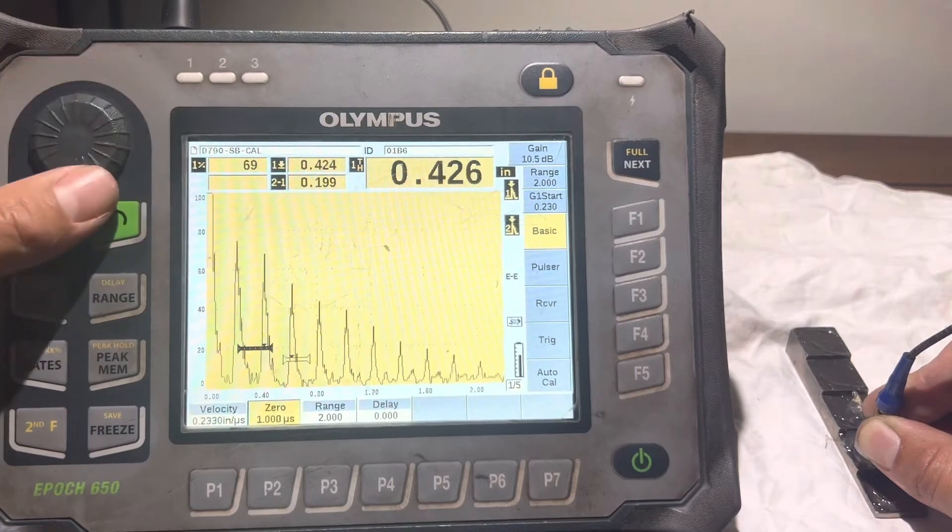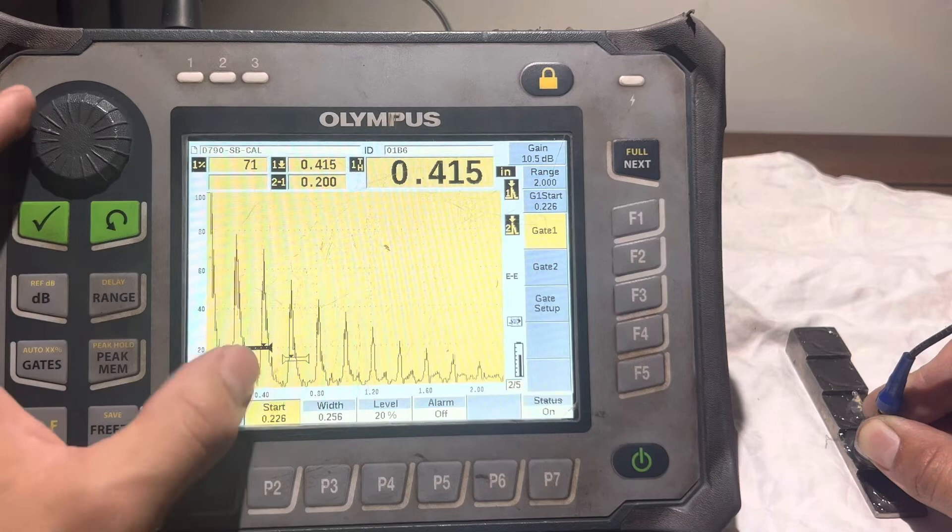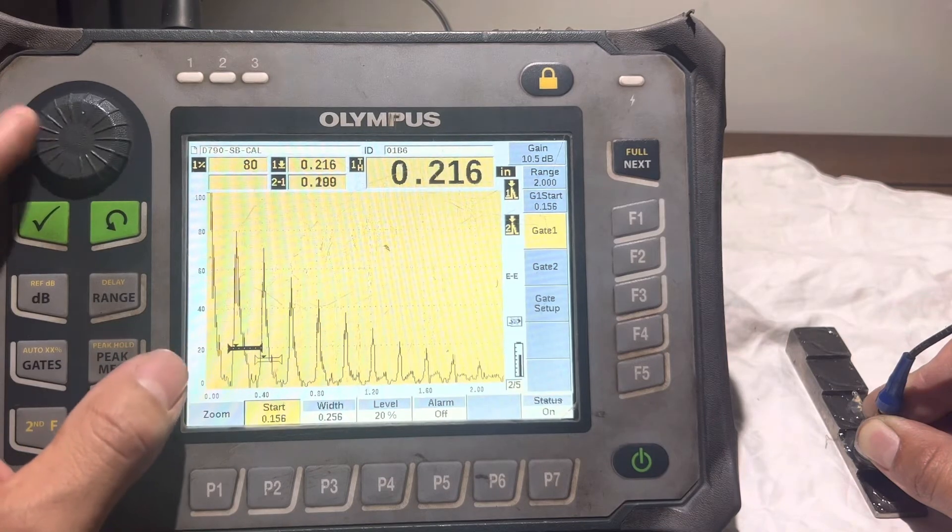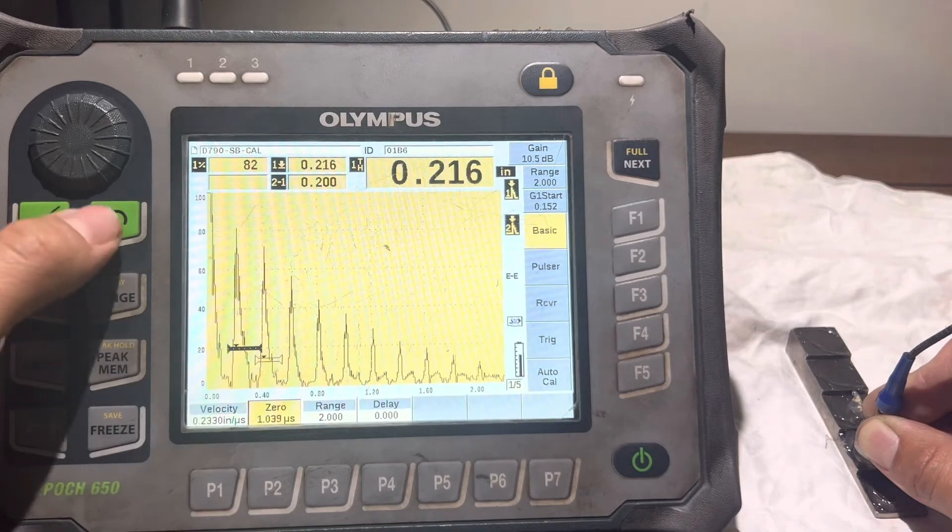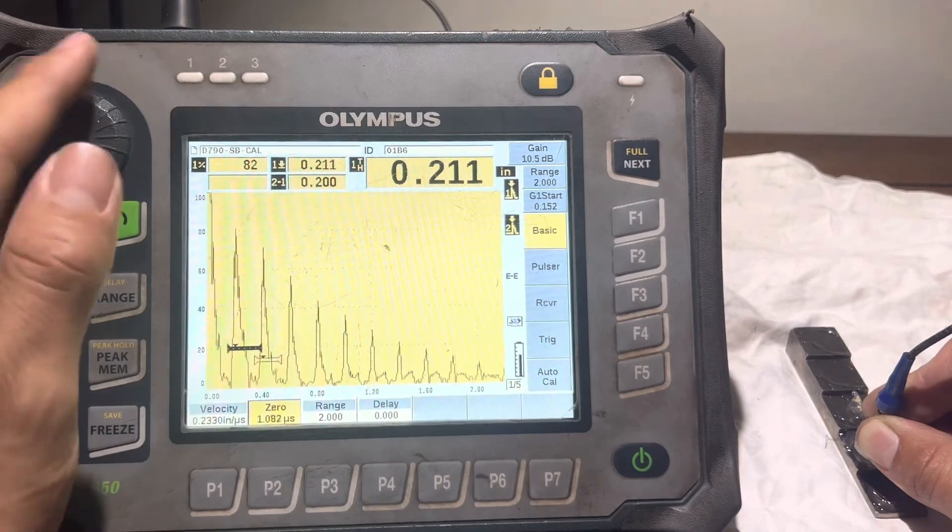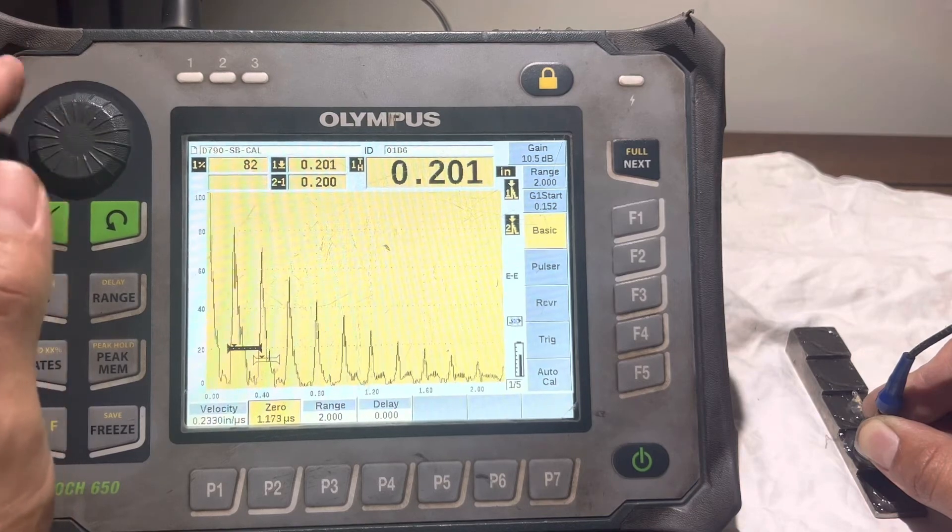Right now it's going to be out of place because it moved. We've got to make sure we're reading our actual thickness right there, our actual peak. As you can see, this will say 200 right there.